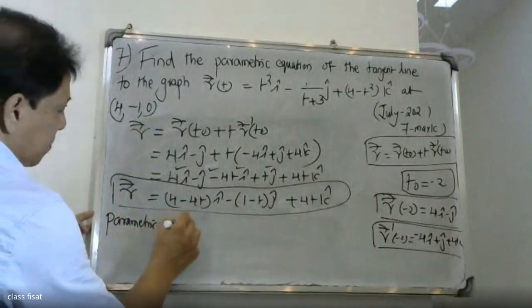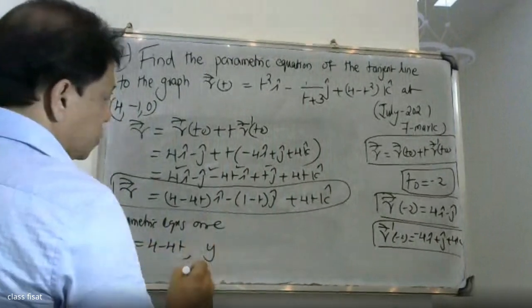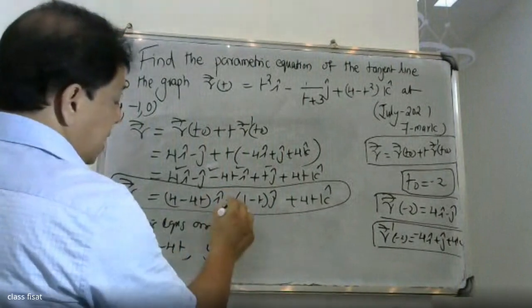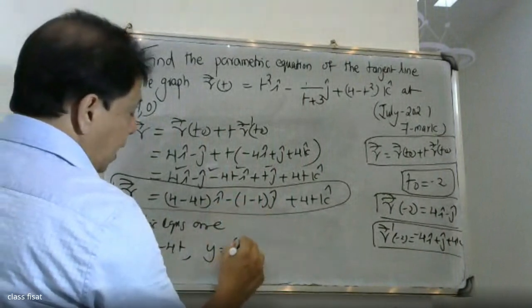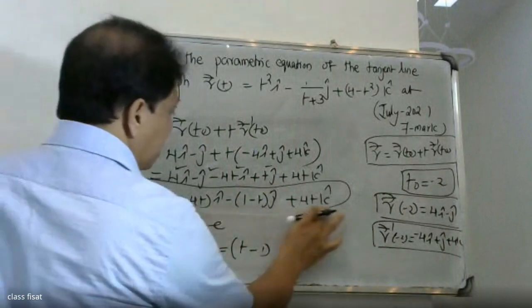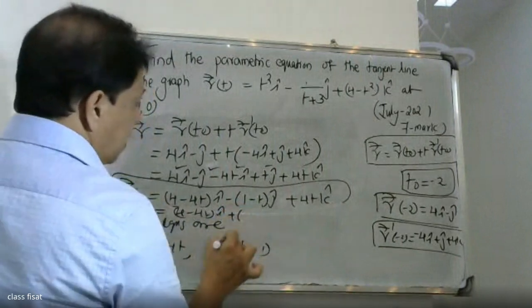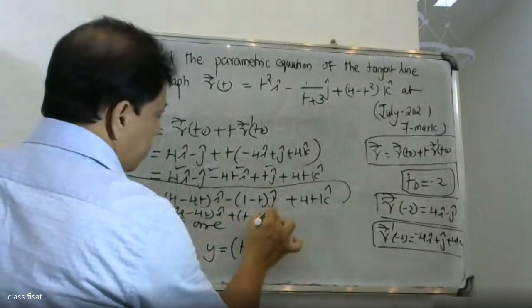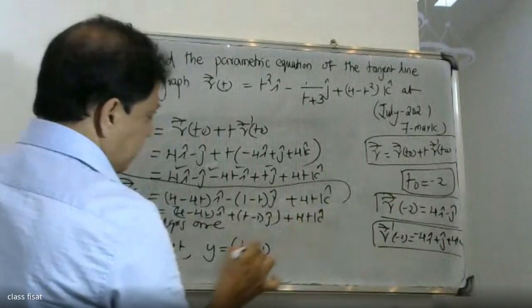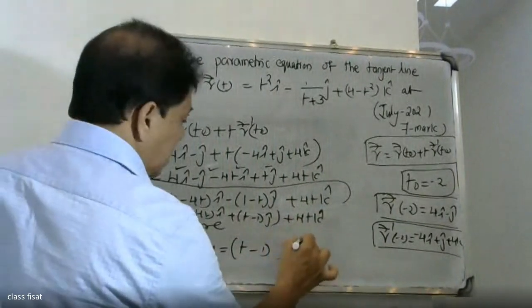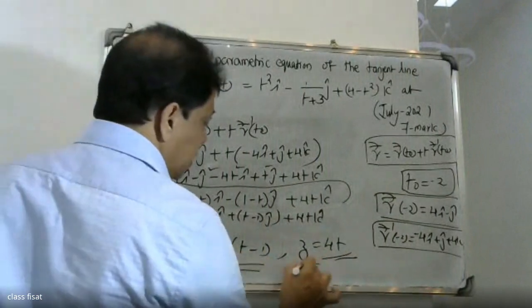Therefore the parametric equations are: x is equal to 4 minus 4t, y is equal to minus 1 plus t, and z is equal to 4t.